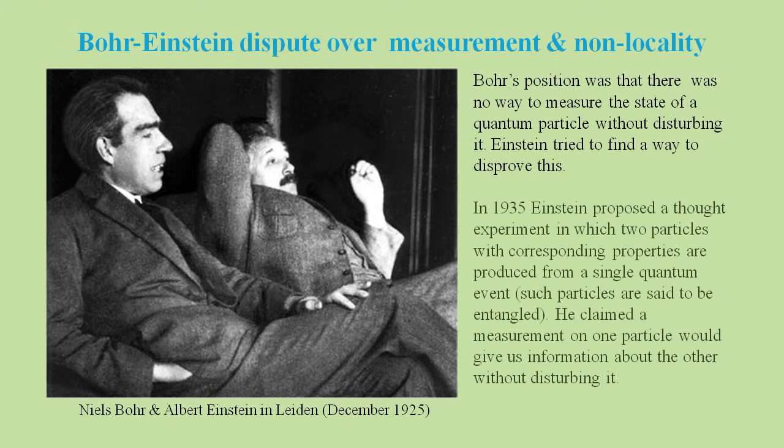So in 1935, Einstein proposed a thought experiment in which two particles with corresponding properties are produced from a single quantum event. These are called entangled particles. He claimed a measurement on one particle would give us information about the other particle without disturbing it.